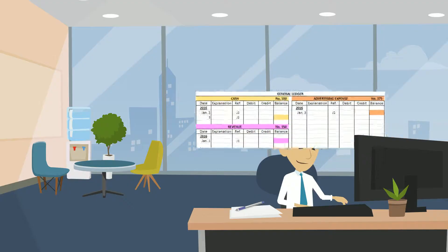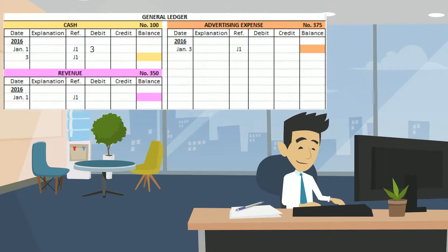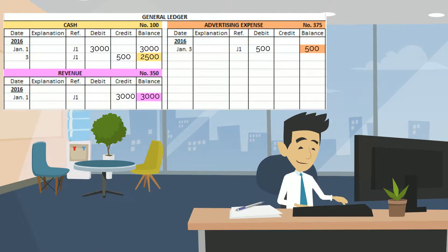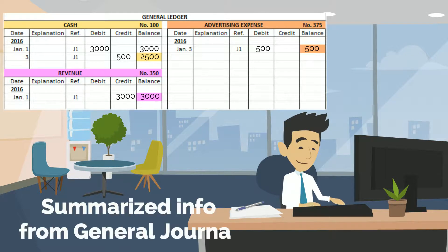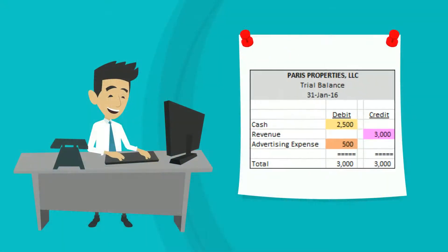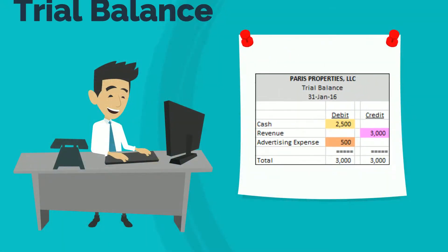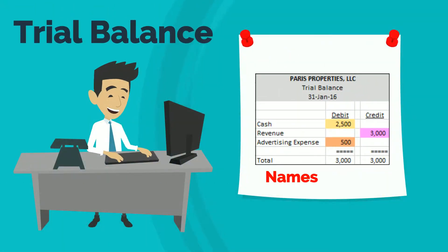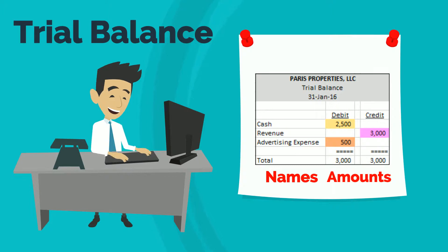The ledger consolidates the journal entries and shows all the transactions for each account over a period of time, with additions, subtractions, and an ending balance. The trial balance shows only the ending balances by name, no account numbers, and it's the start of producing the financial statements.